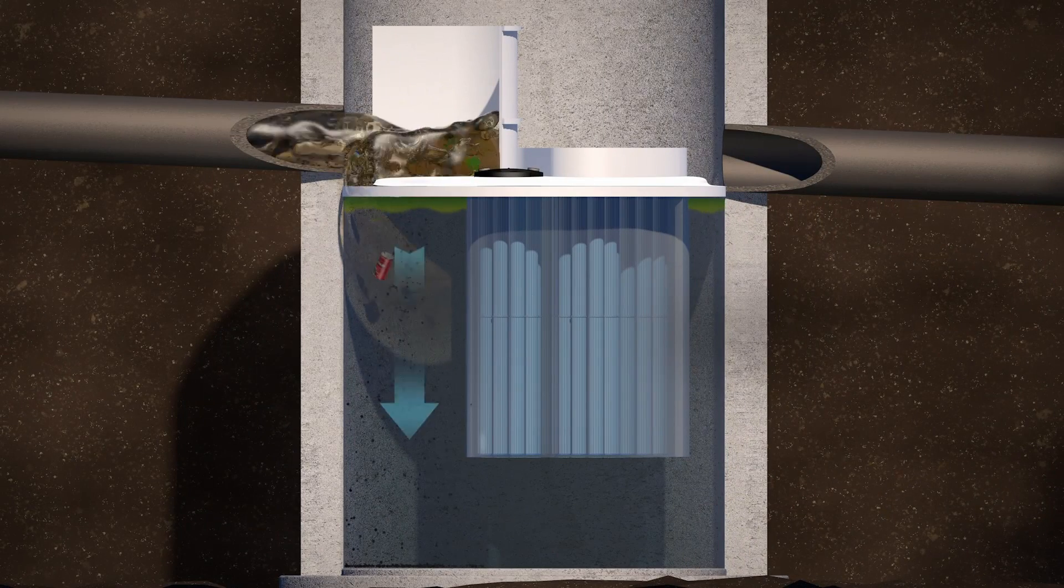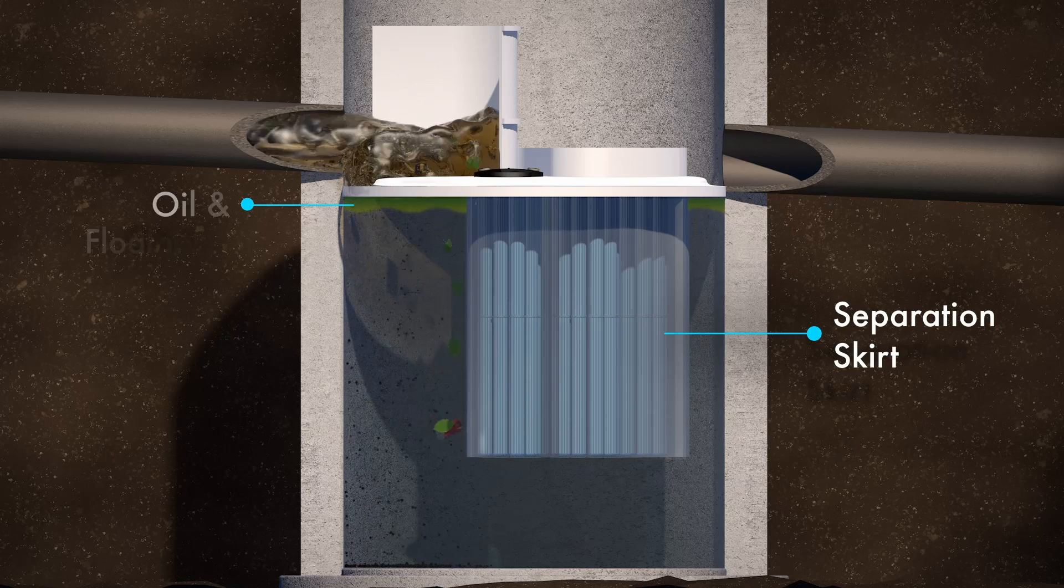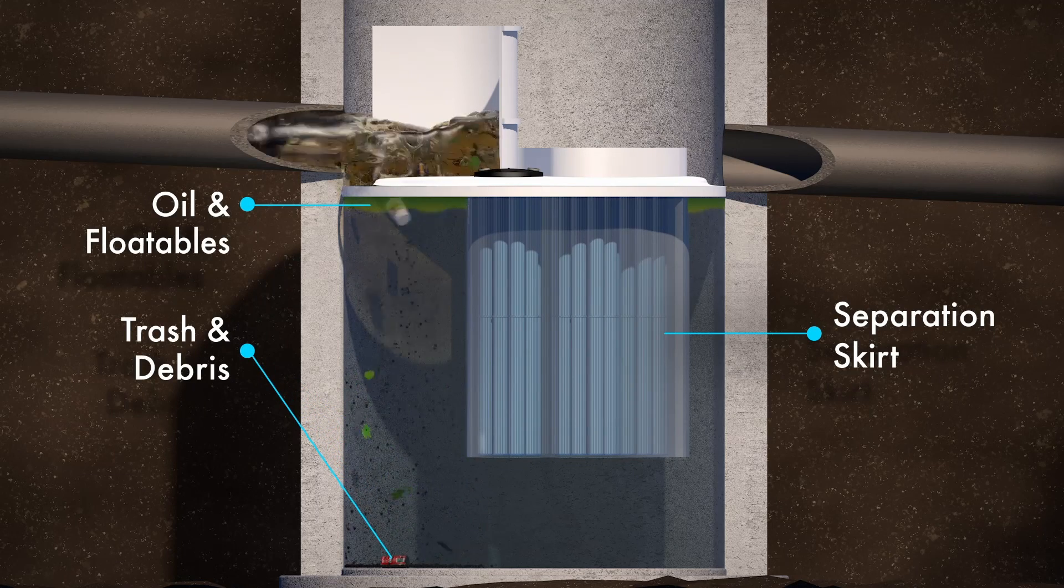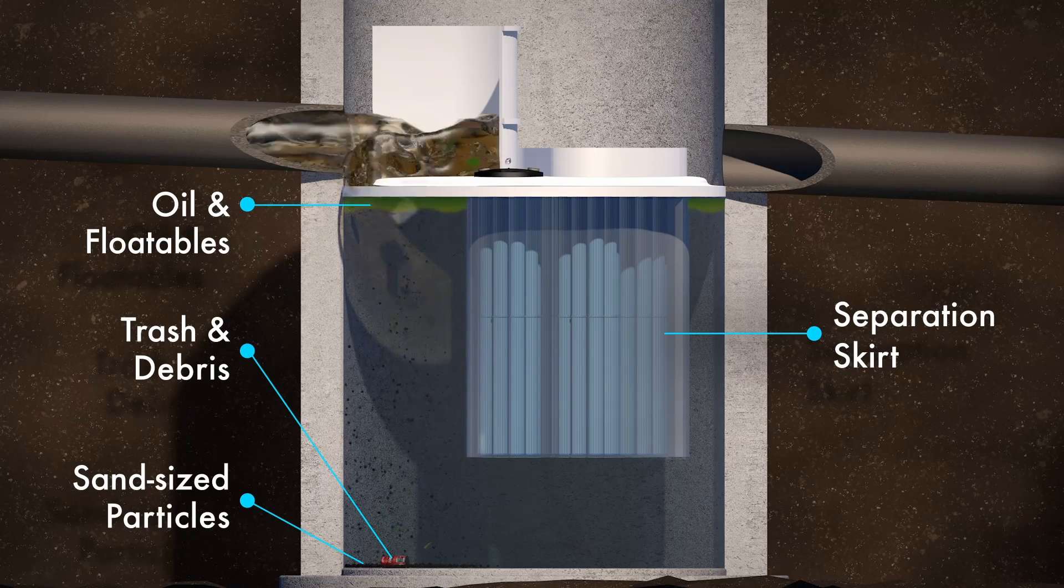Water is pushed down to the treatment chamber, where a separation skirt around the cartridges traps oil, trash and debris outside the filtration zone and allows sand-sized particles to settle below the cartridges in the sump.